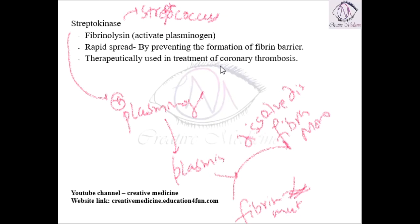Streptokinase can be used in coronary thrombosis. It is actually a drug which can be used in cases of AMI. However, it is not used recently because, being developed from bacteria, it is antigenic. As a result, antigenic and allergic reactions are seen with streptokinase, so it is not used more commonly.